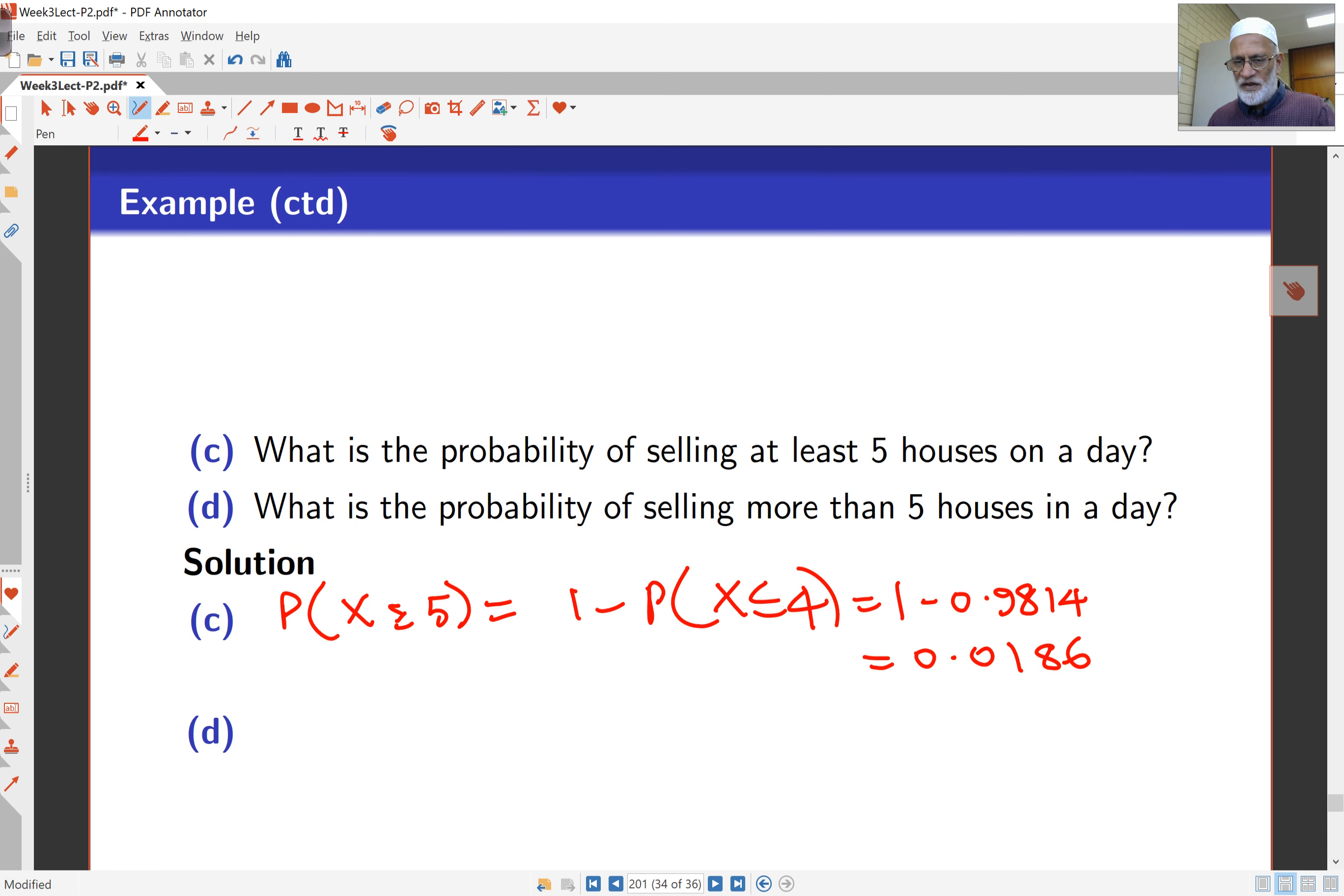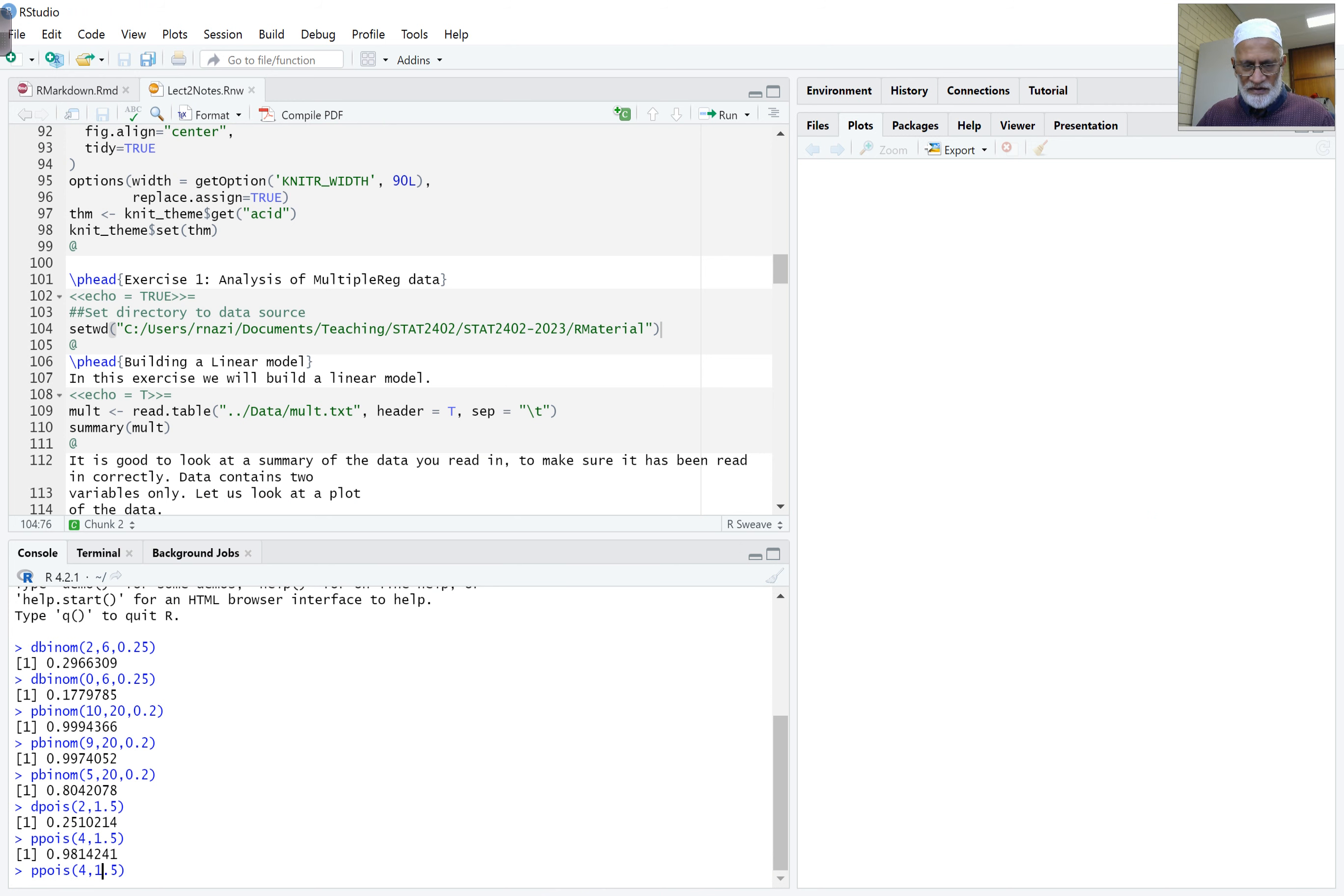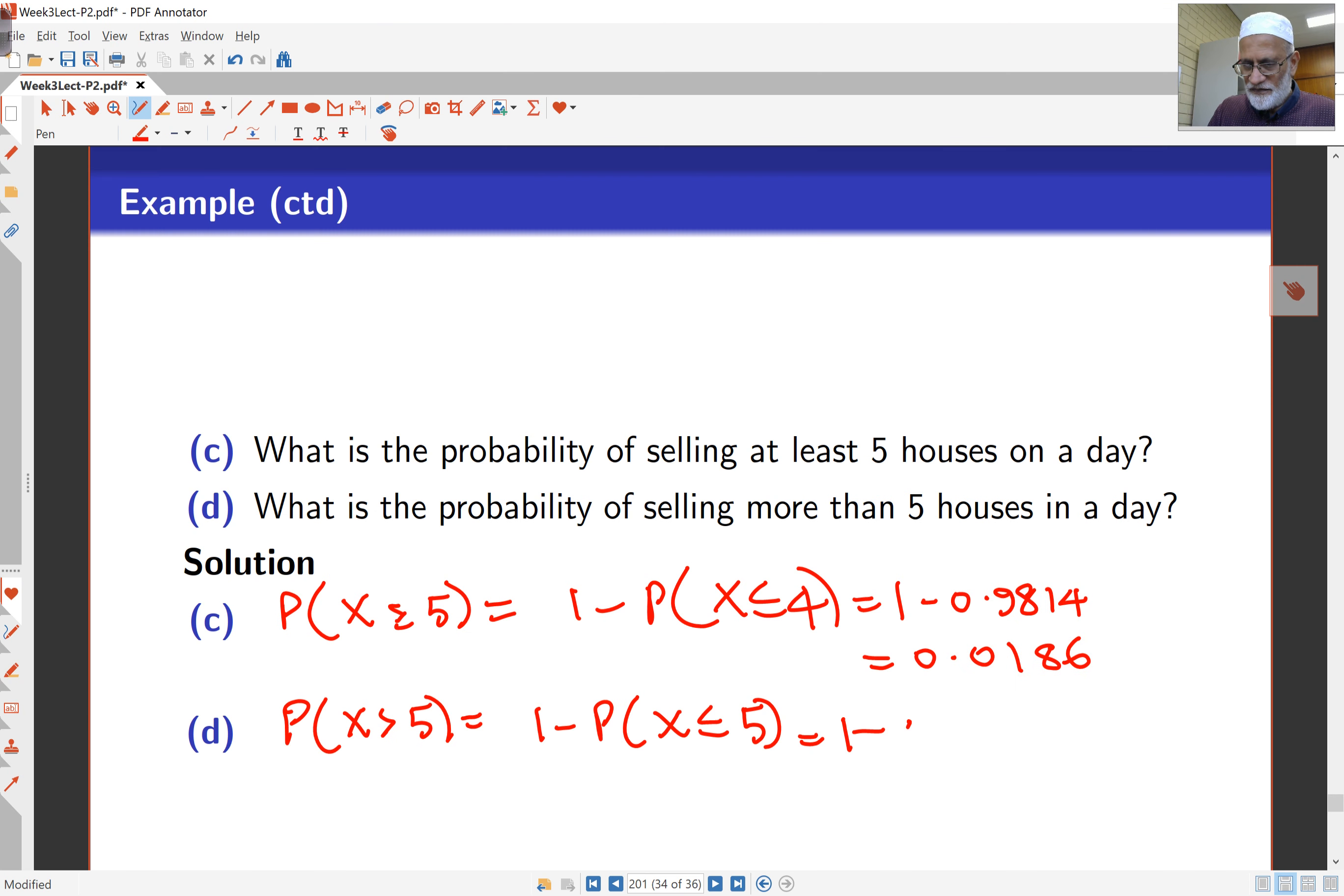And the probability of selling more than 5 houses. So this is the probability now of X being greater than 5. So that will be 1 minus the probability of X being less than or equal to 5. And so in my R, all I do is change this number now to a 5. And I get 0.9955. And that's 0.0045.